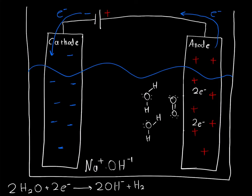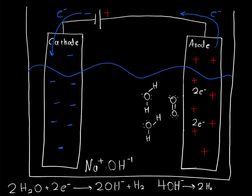So what we originally started with were four hydroxides, and what we ended up with were two water molecules, O₂, and four electrons coming out. That's how these two reactions occur.